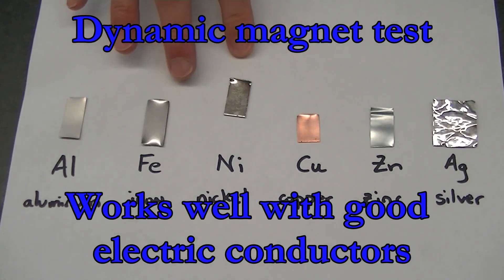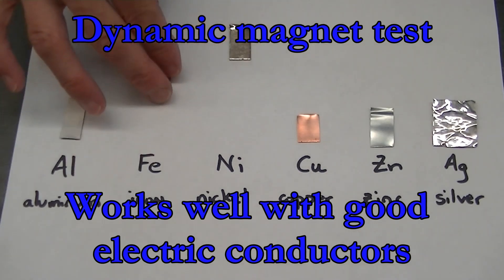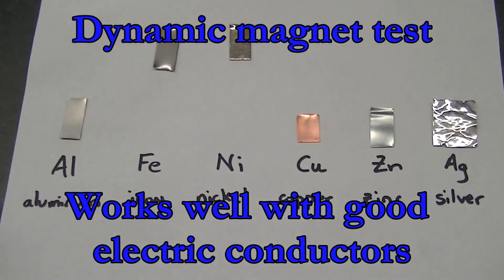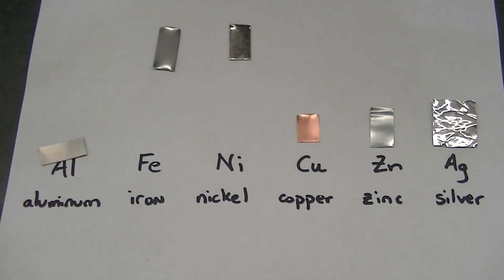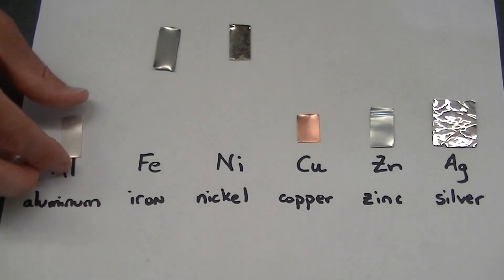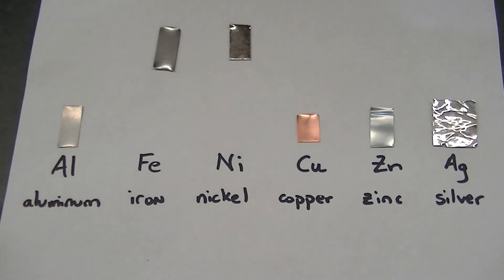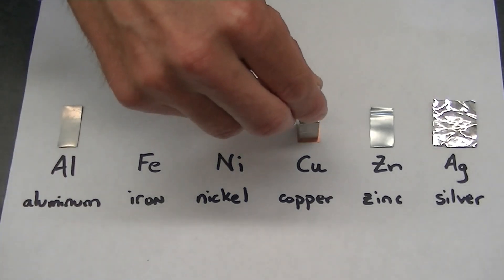We're now going to test to see if some of these metal samples are attracted to a moving magnetic field. To do this, we'll push down hard on a metal sample and pull up really fast. We see that aluminum is attracted to a moving magnetic field when we do this test.